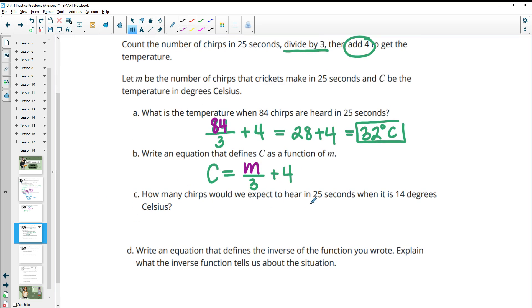How many chirps would we expect to hear in 25 seconds when it is 14 degrees Celsius? So now we know the temperature is 14, and we want to solve for the number of chirps. So we would want to subtract the 4 first from both sides. So we would get 10 equals whatever the chirps are, divided by 3. So then we could multiply by 3 to get that the number of chirps had to have been 30.